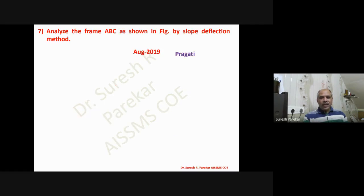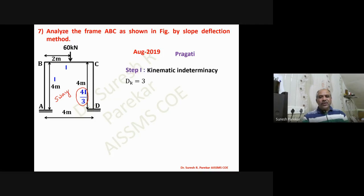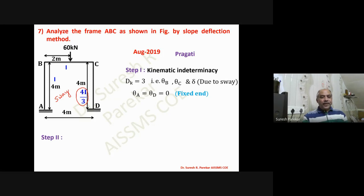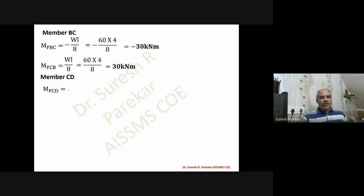The next problem from August 2019 is solved by Pragati. While the frame appears symmetrical about the center, the value of I changes — here I = 4I/3 — making it asymmetrical. Therefore this frame undergoes sway, and we must include delta in the horizontal direction for columns AB and CD. The unknowns are now three: theta_B, theta_C, and delta. Fixed end moments: M_F_AB = 0, M_F_BA = 0, M_F_CD = 0, M_F_DC = 0; for BC: M_F_BC = -wL/8 = -30 and M_F_CB = +30.